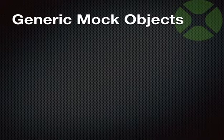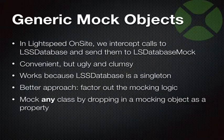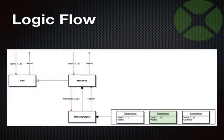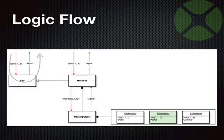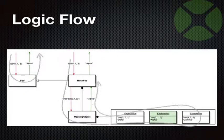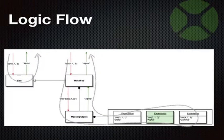The logic flow we want is this: if I have a foo object and I know that when I call the method bar with certain parameters it returns the string 'alpha', I want the mock foo to do the same thing. But internally, the mock foo talks to its mocking object and says: I got called with method bar with these parameters — do you know what that is? And it says: yes, I expect that, I've been told it's going to return alpha. And then the mock foo object knows how to return alpha.